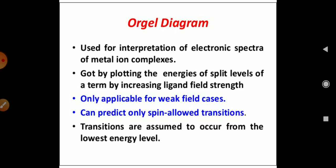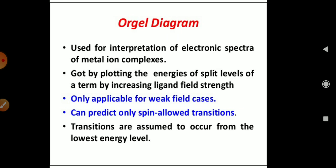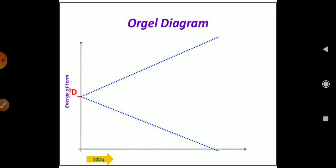The transitions which are assumed to occur from the lowest energy are only allowed for these diagrams. Here you can see the general Orgel Diagram of a 2D term symbol.